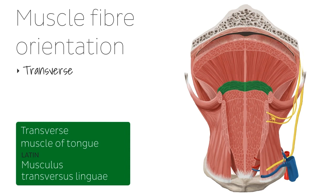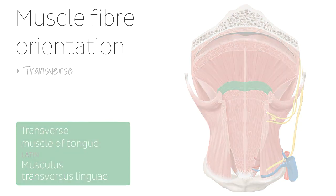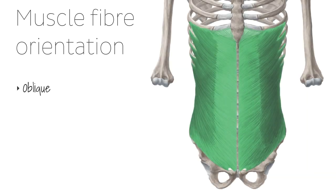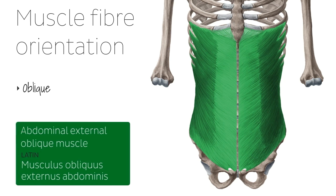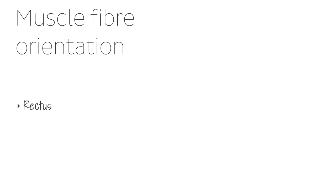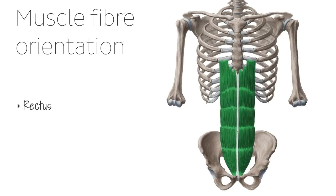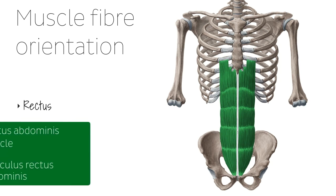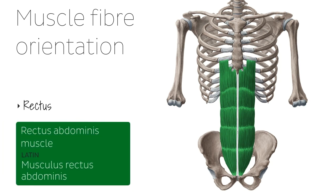The term transverse, as in the transverse muscle of the tongue, is used to describe muscle fibers that run perpendicular to the midline. The term oblique is used to describe muscle fibers that run diagonally at an angle or slanting. A good example of this would be the oblique muscles of the abdomen — here we see the external oblique muscle, whose fibers run obliquely. Finally, the term rectus describes muscle fibers that run parallel to the midline, such as in the case of the rectus abdominis muscle.